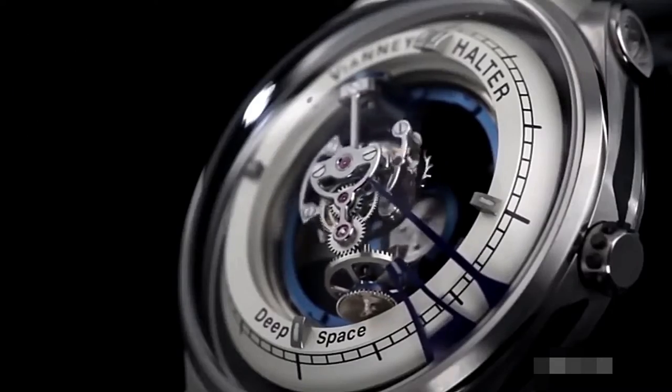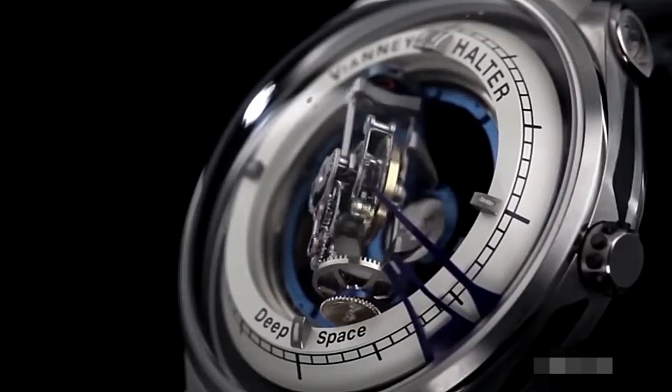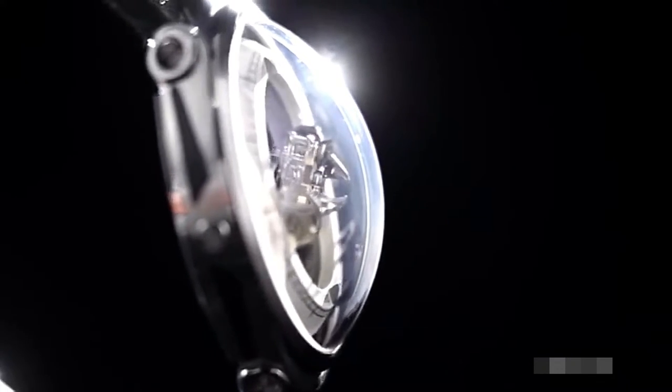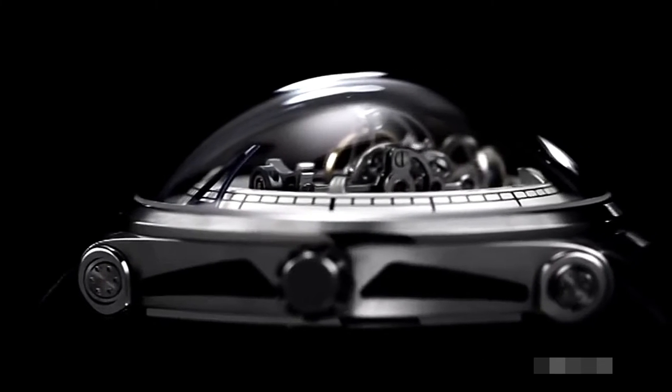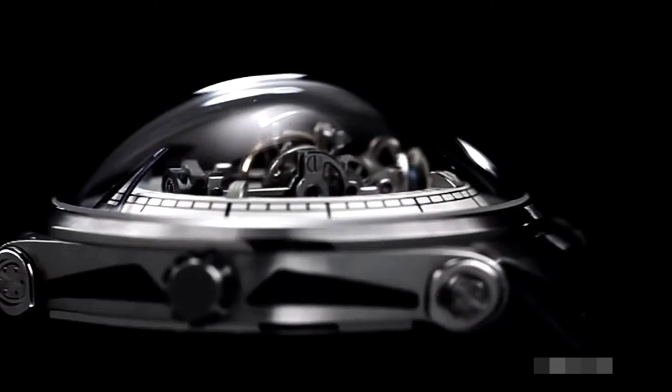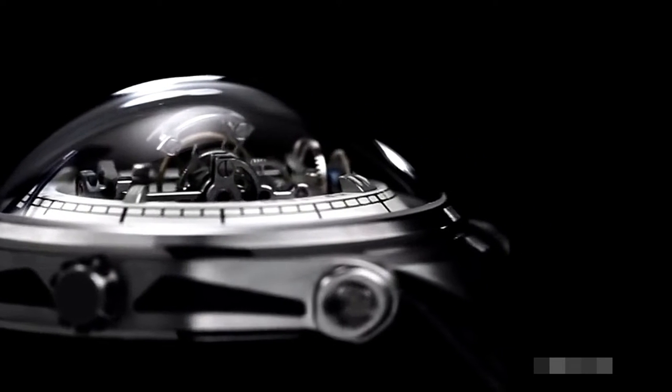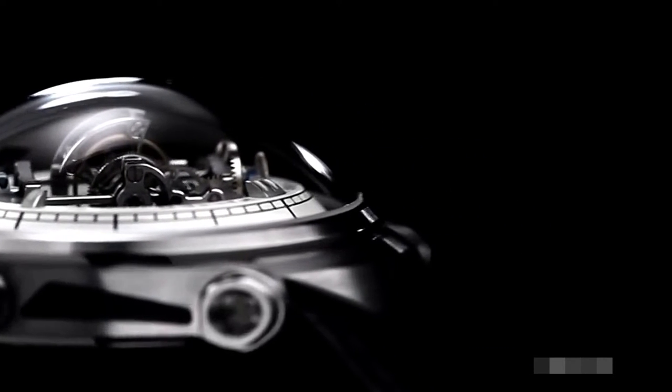The time is told by the blue hands that travel around the outer perimeter of the dial. All of this sits under a sapphire crystal dome suggestive of space colonies found in science fiction stories. The Deep Space Tourbillon and its price of $180,000 are both out of this world. The question is, will buying one guarantee that you'll live long and prosper? Only time will tell.